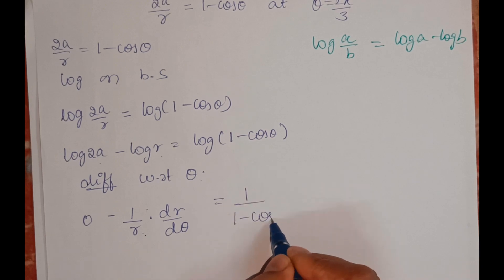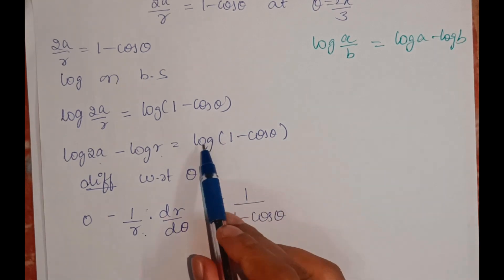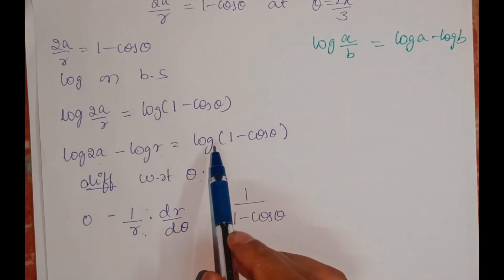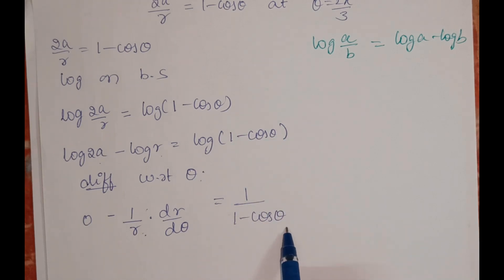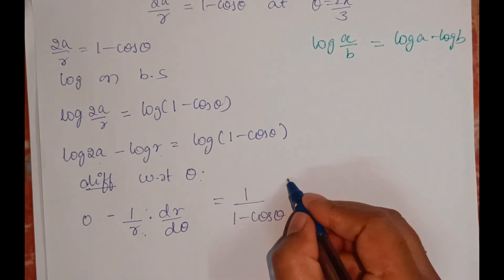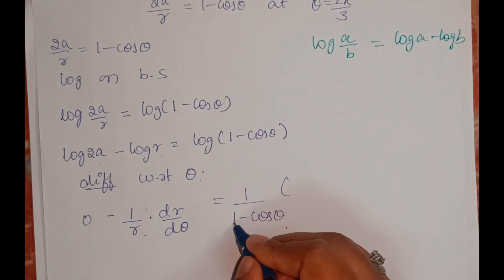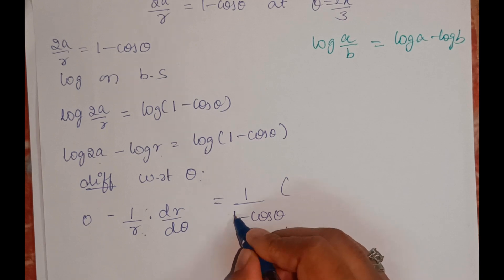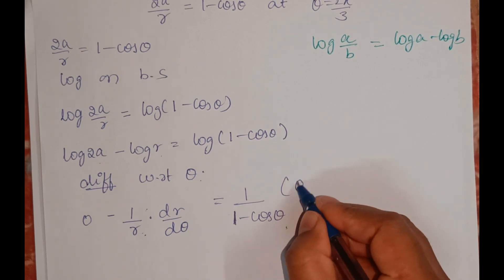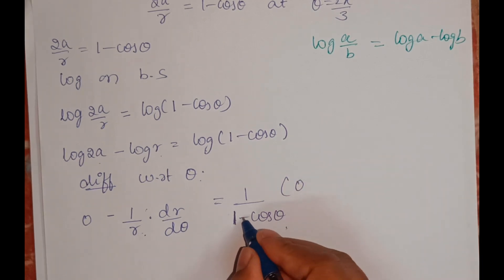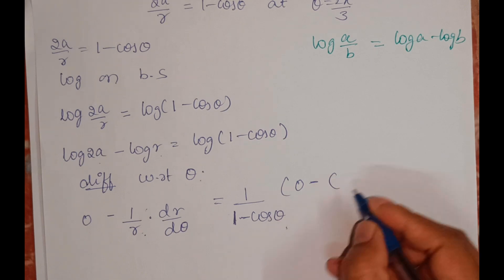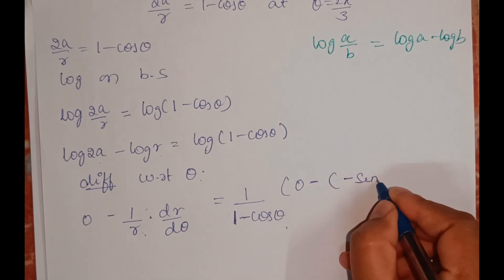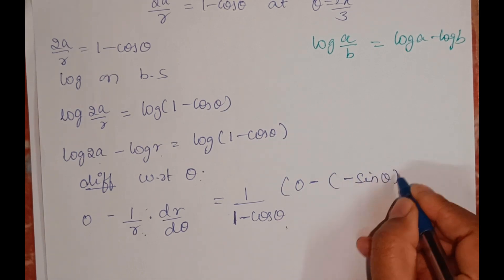This equals 1/(1 - cosθ), since differentiation of log(1 - cosθ) is 1/(1 - cosθ). Now we differentiate (1 - cosθ): the derivative of 1 is 0, and minus cosθ gives +sinθ.